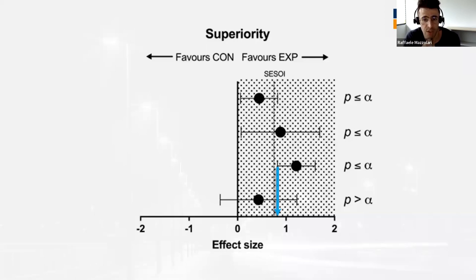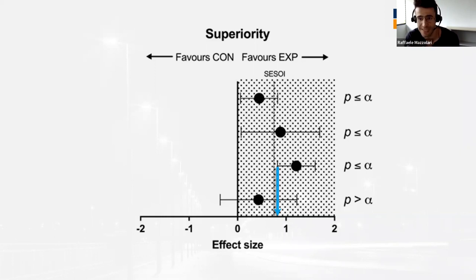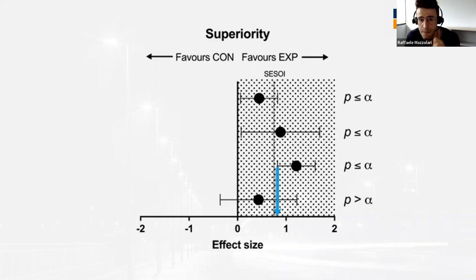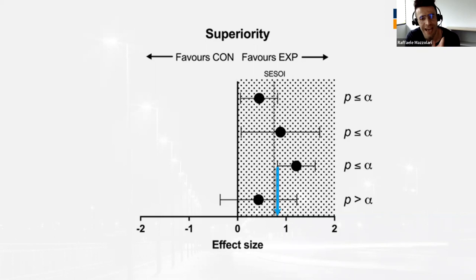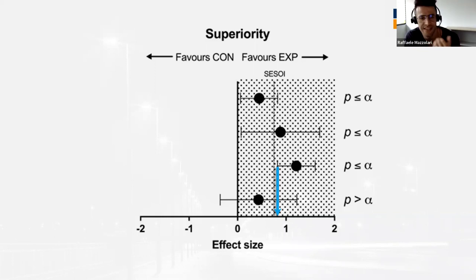So far I've talked about superiority studies, which share the goal of determining if one intervention is more efficacious than another, regardless of the level of evidence. But other research questions might be more appropriate for interventions that are less invasive, cheaper, or better tolerated by individuals. Instead of asking whether a new intervention is better than a standard or control, we might ask whether two interventions are similar in efficacy, or whether a new intervention — especially if cheaper, less invasive, or better tolerated — is not substantially worse than the current standard.